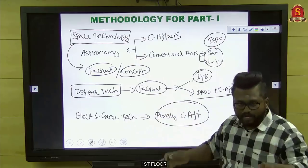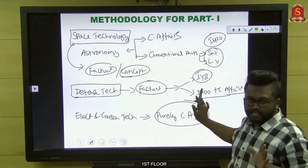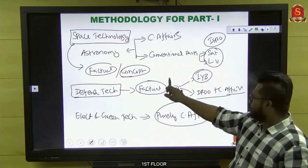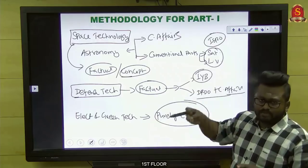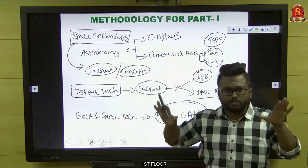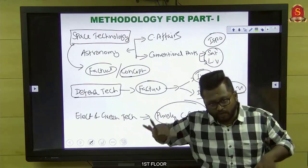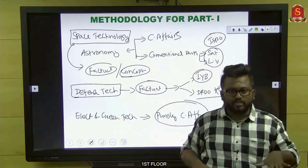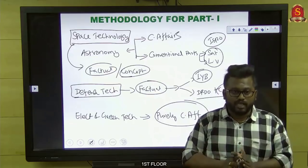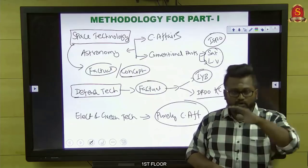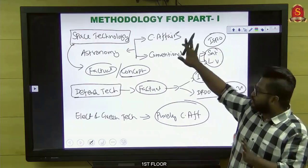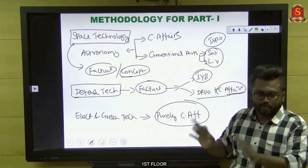For defense technology, it's purely factual — India Yearbook, DRDO, and occasionally some concepts from current affairs. For space technology, you need to balance both factual and conceptual. Sometimes a hybrid question — combination of factual and concept — can also be expected. Current affairs, conventional, and the combination are all needed. This is the methodology to prepare space, defense, electronics, and green technology for Part 1.